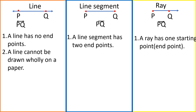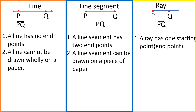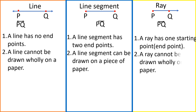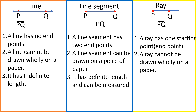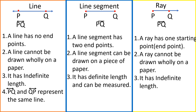A line cannot be drawn on paper. A line segment can be drawn on paper, but a ray cannot be drawn on paper just like a line. A line has indefinite length, but a line segment has definite length which can be measured, while a ray has indefinite length.